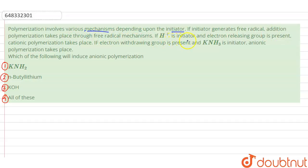If H+ is initiator and electron releasing group is present, cationic polymerization takes place. If electron withdrawing group is present and KNH3 is initiator, anionic polymerization takes place.